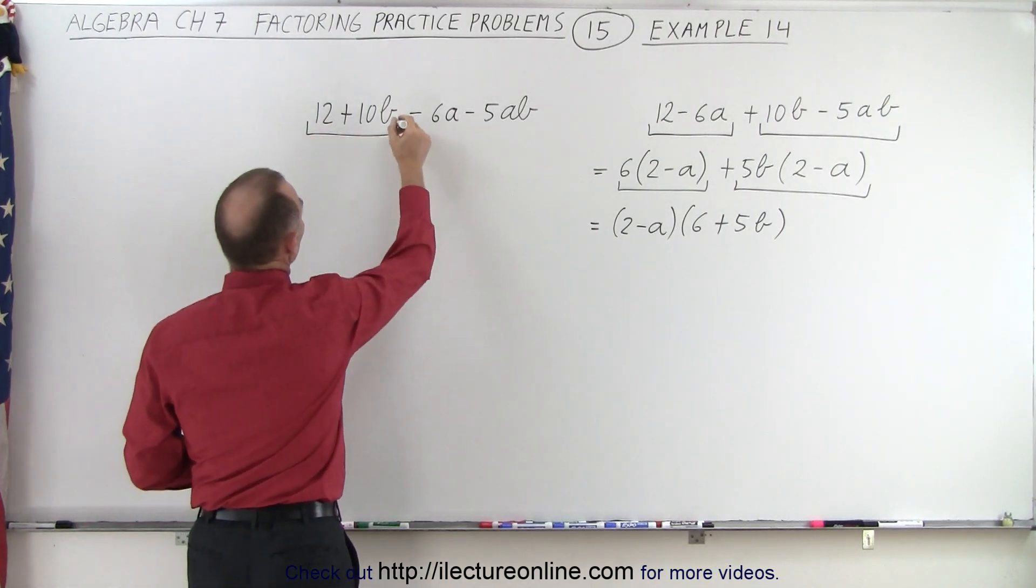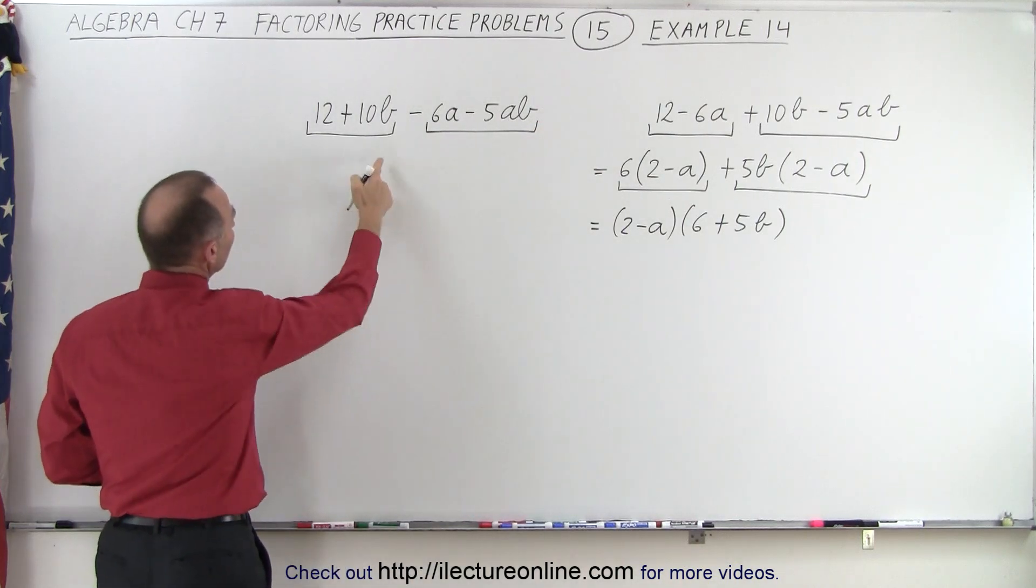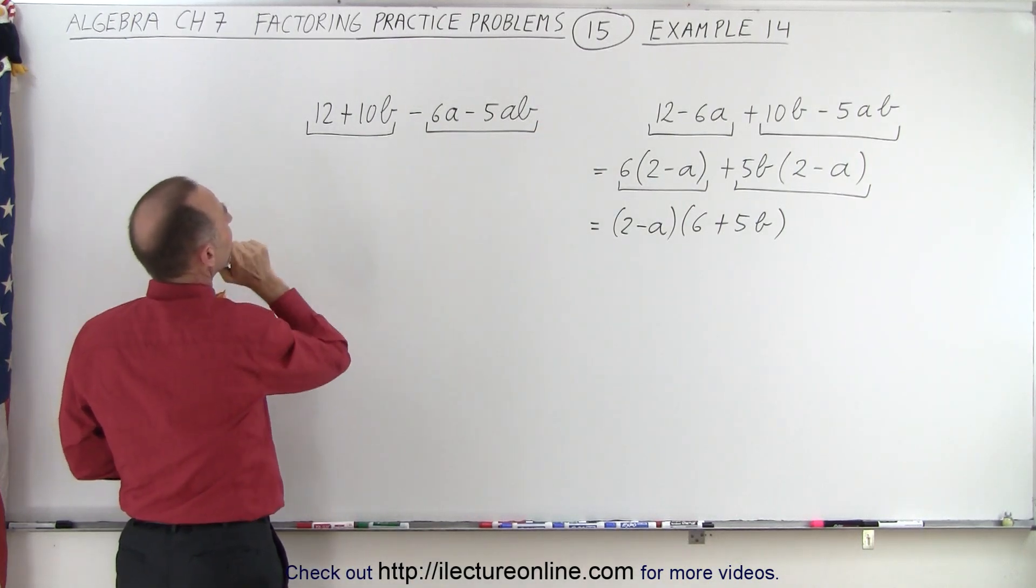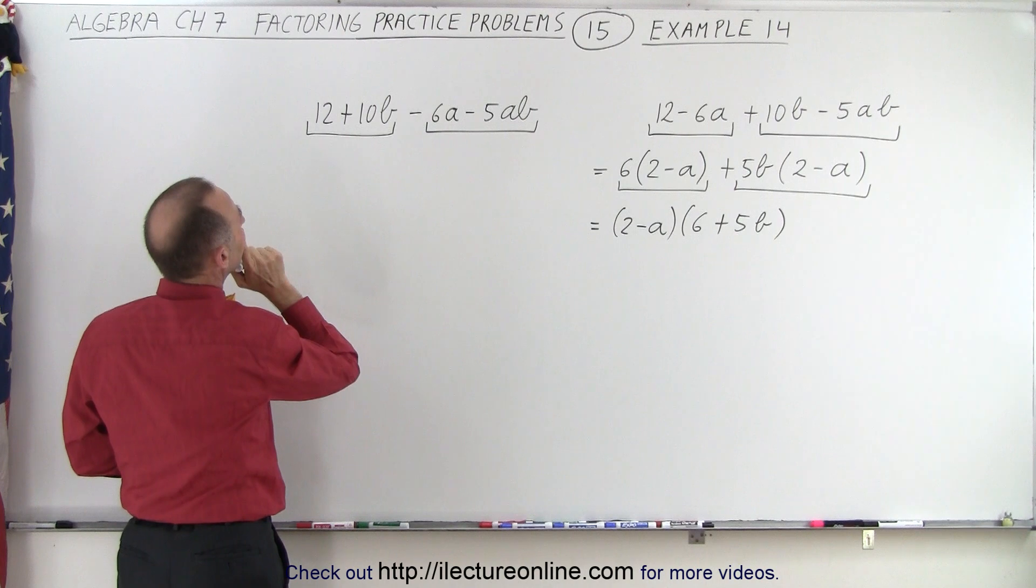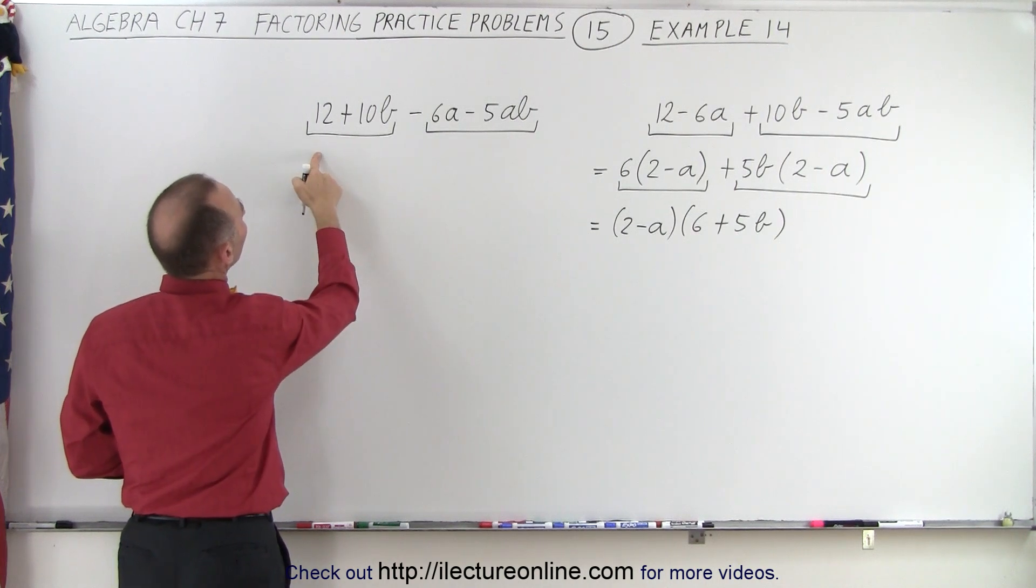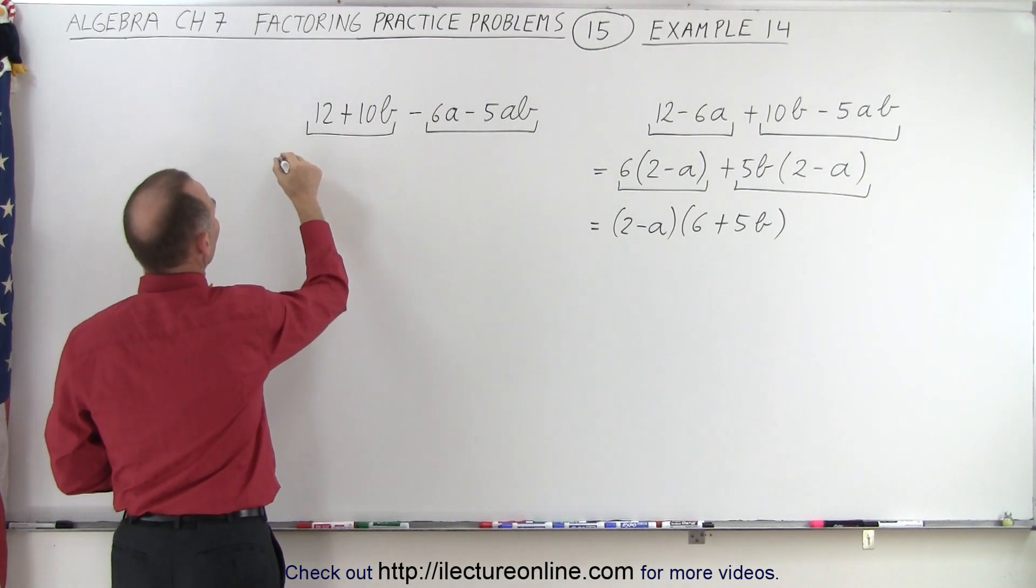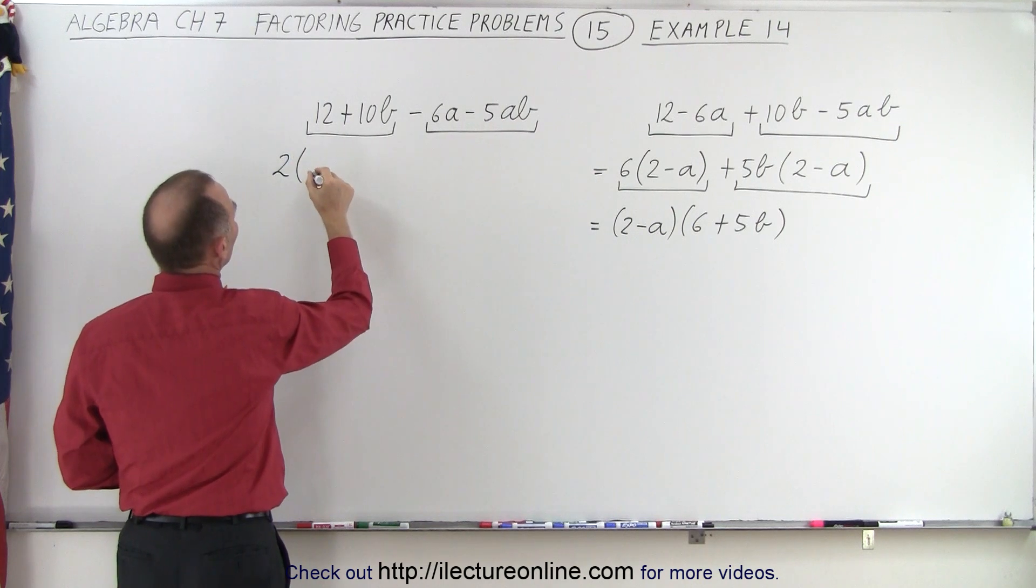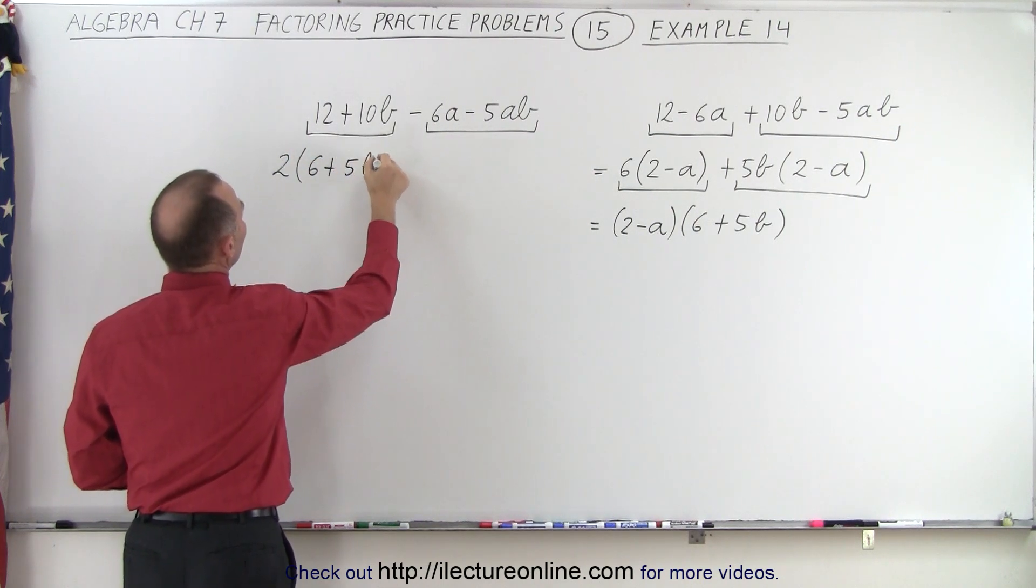Well, let's group the two first ones and the two second terms together. Here, we have a common factor. The common factor would be 2, so we have 2. And that leaves us with a 6 plus 5B.